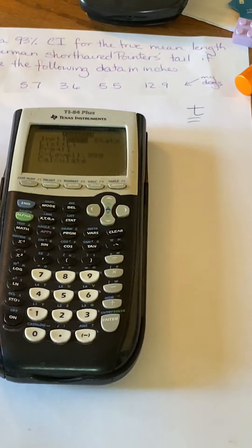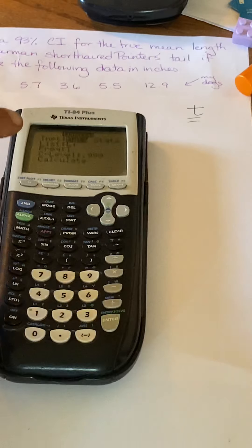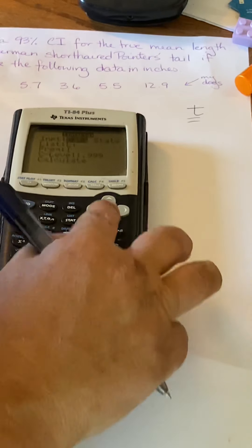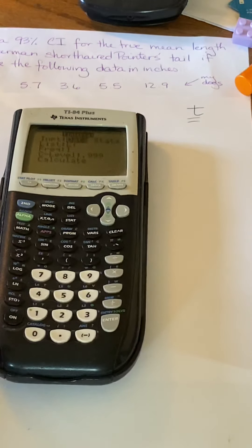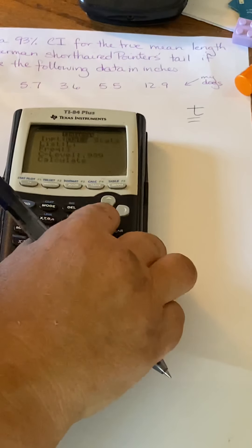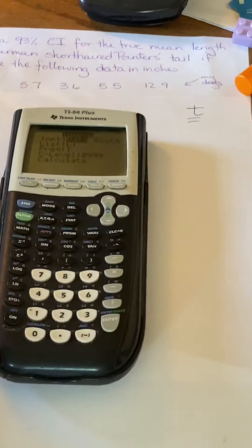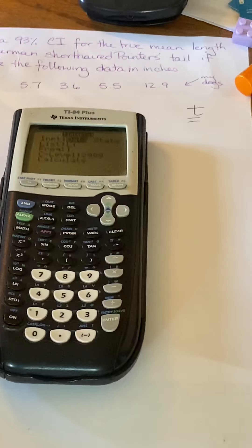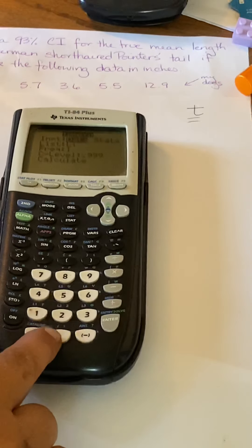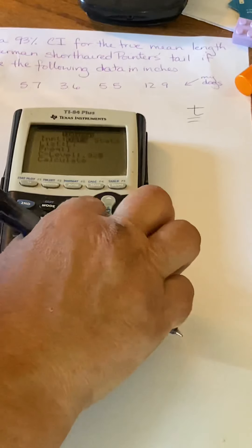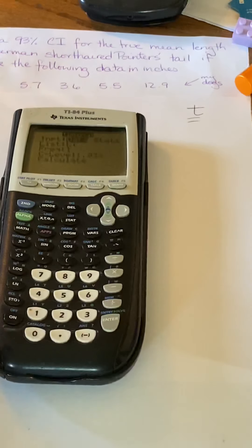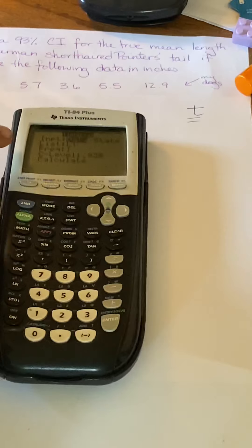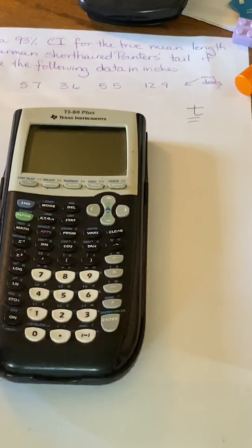And then you're going to notice it's going to give you some options here. So one of the options is data or stats. Well, we plugged in the data so we can slide down from there. It was in list one. It asks you the frequency. Don't worry about that. Just go through that. That should be just one. And then it says the C level. Now, our C level is our 93% confidence. So remember, not 93, but 0.93. So we've got our data in there, L1, 0.93. Calculate.